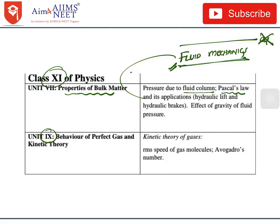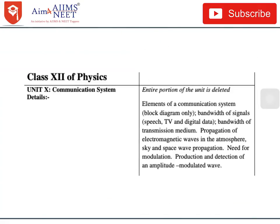In Unit 9 — Behaviour of Perfect Gas and Kinetic Theory — kinetic theory of gases, RMS speed, and Avogadro's number have been deleted; all other things remain important. Now let's see the deleted portions of the Class 12 part of physics.